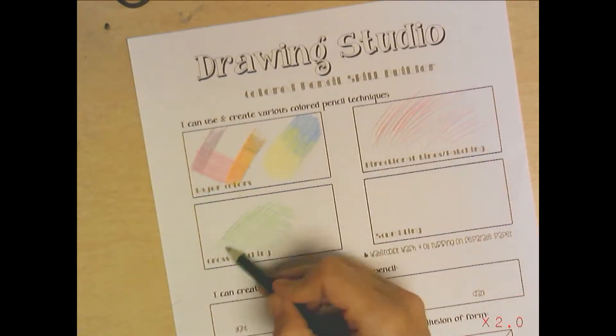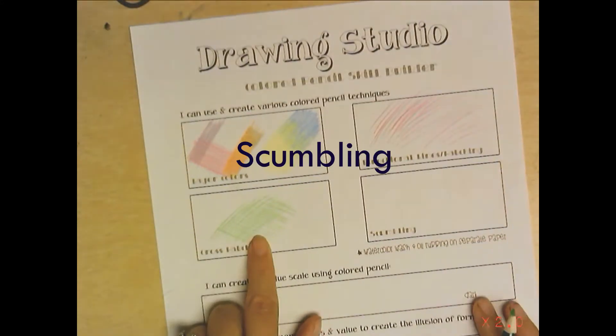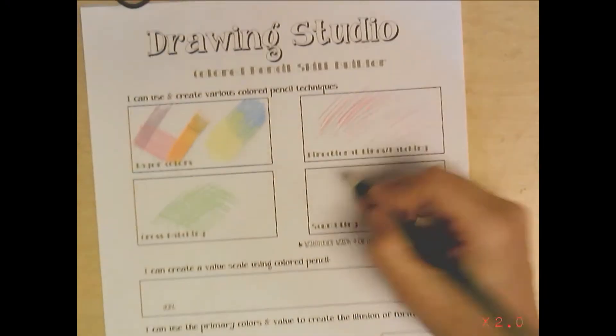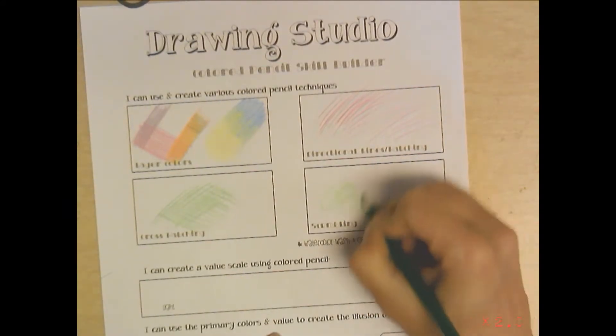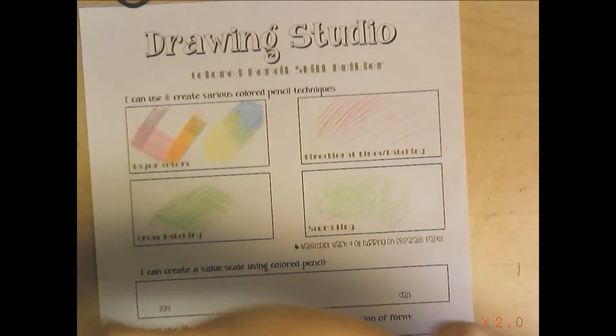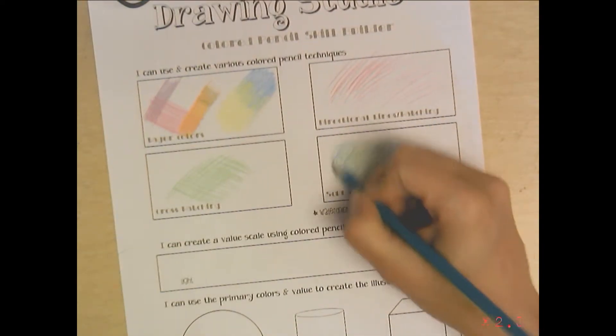Then we have scumbling. Scumbling is really fun. I'm going to take a few colors here. Scumbling is almost like scribbling - you go in a circular motion. When I scumble so it doesn't look so much like scribbles, I layer in colors. Some areas if you want it to look darker you press harder, if you want it to look lighter you press lighter, but you just kind of keep going in this circular pattern.